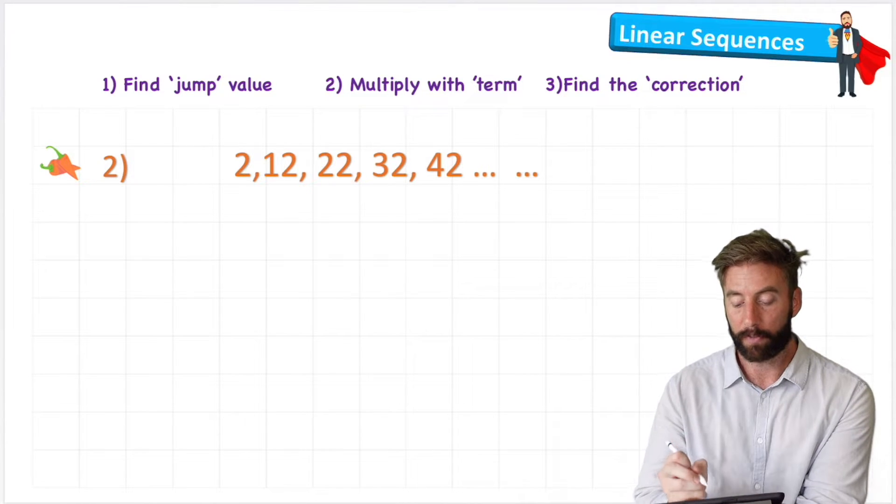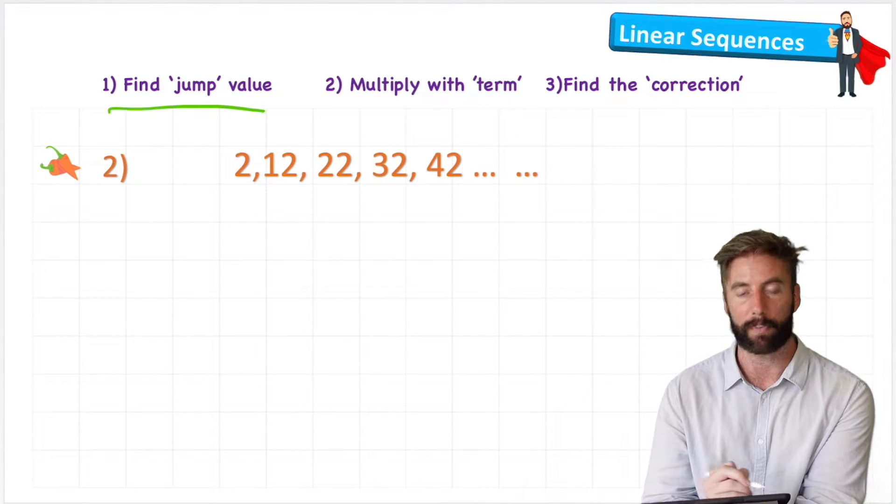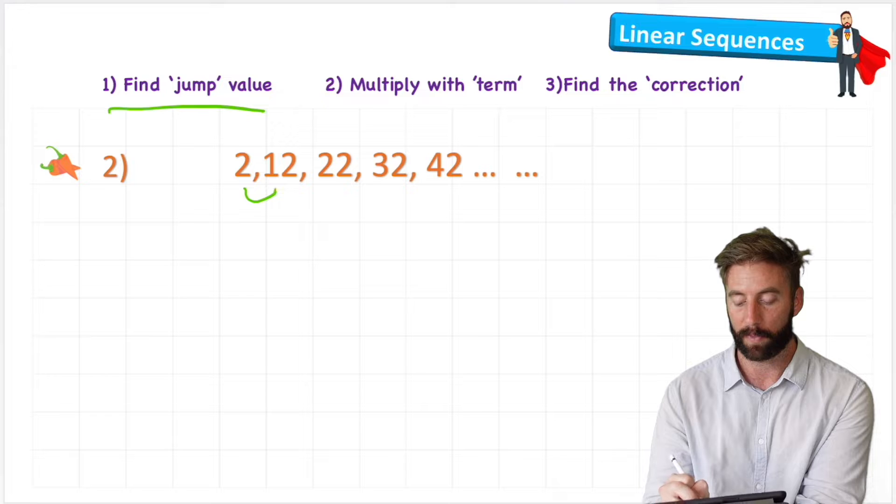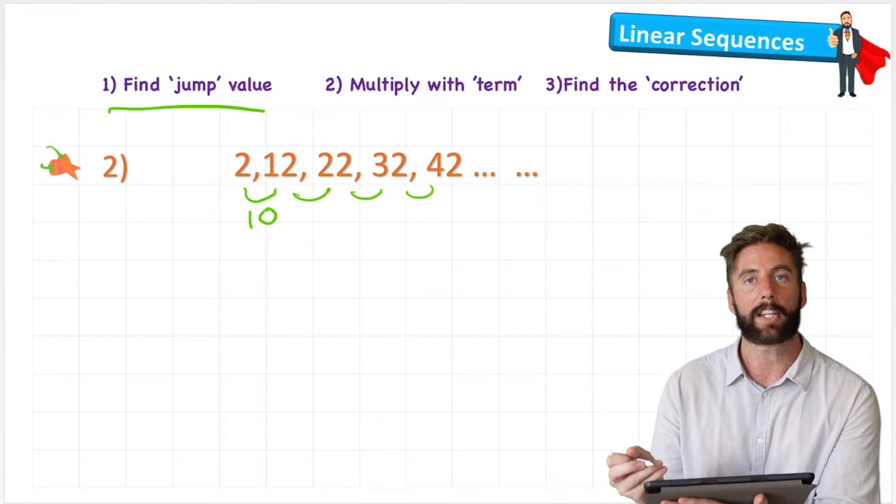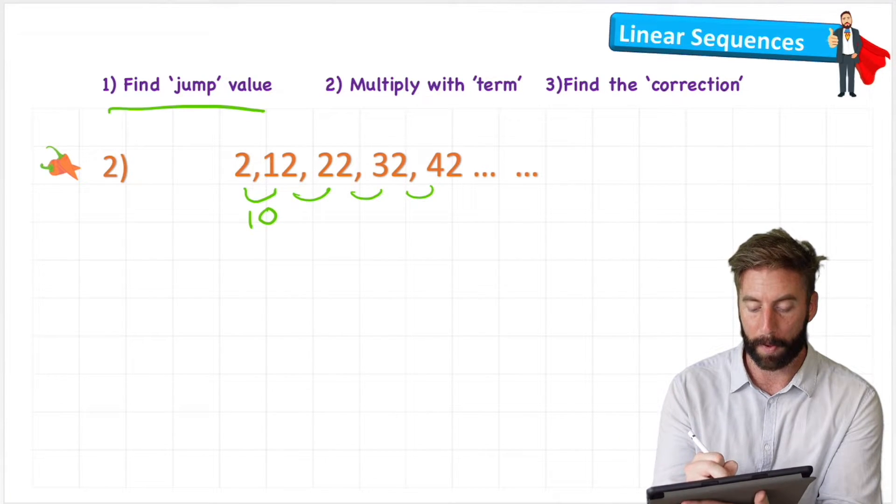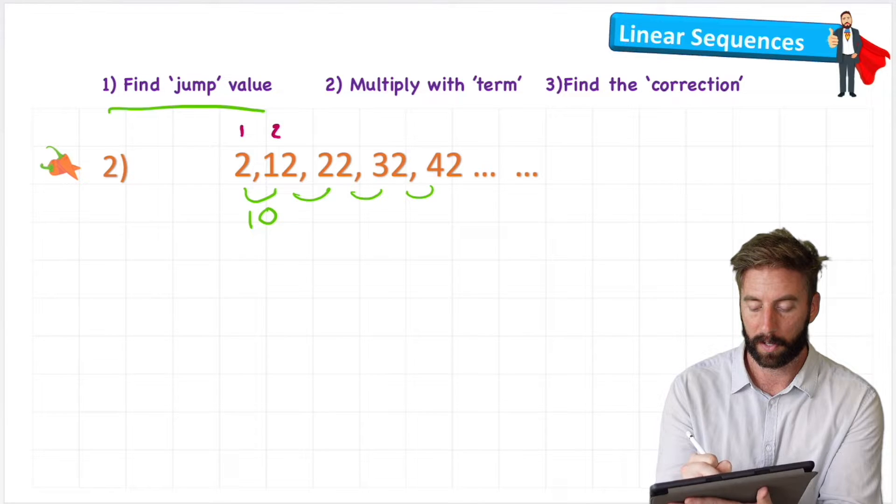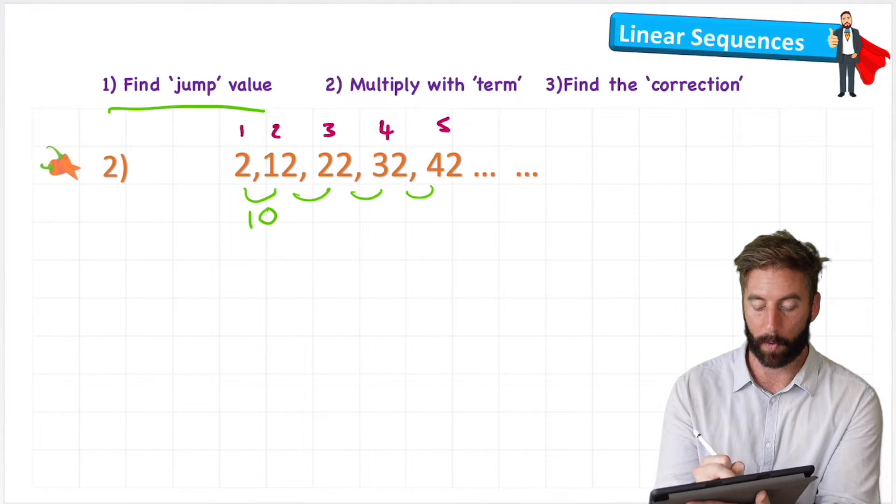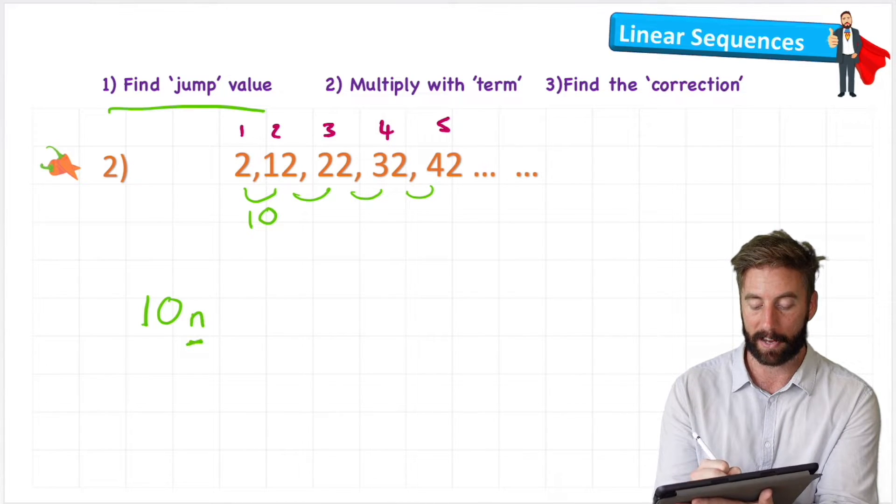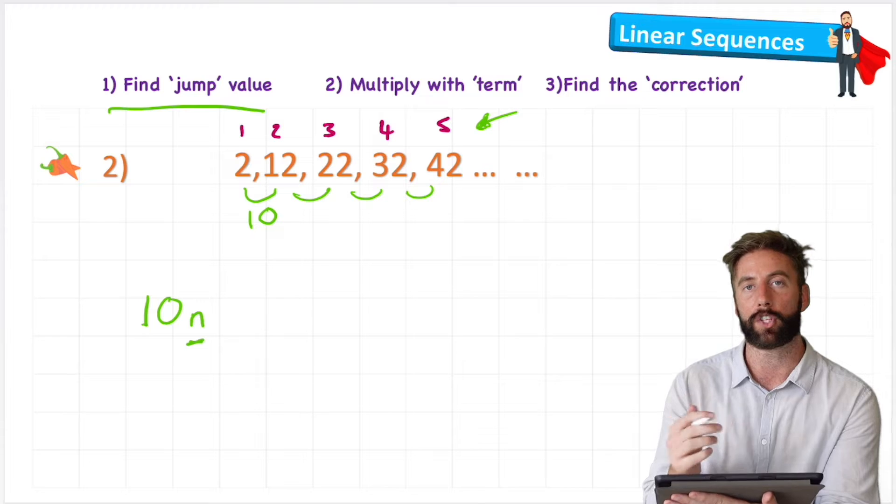Let's look at a harder one. So the first thing I need to do again is find the jump value. So I can see this time the gap is 10. Next, what I can do is finish off my table by putting the numbers of the terms on the top. And then to start my formula, I will write 10n, remembering that this n just means the number of the term that we're looking for.